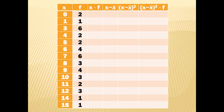The data values range from 0 to 15, with some missing (no households reported 2 eggs or 13 eggs). The distinct values and their frequencies are: 0 (twice), 1 (once), 3 (six times), 4 (twice), 5 (twice), 6 (four times), 7 (six times), 8 (three times), 9 (four times), 10 (three times), 11 (twice), 12 (three times), 14 (once), and 15 (once).